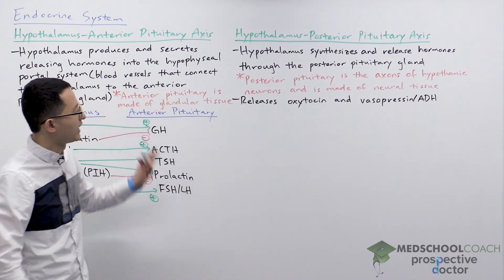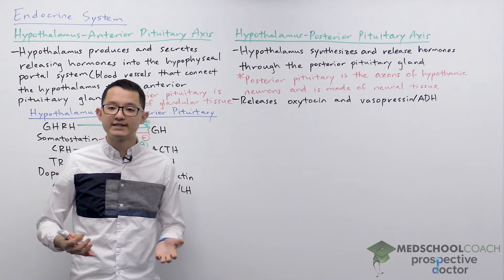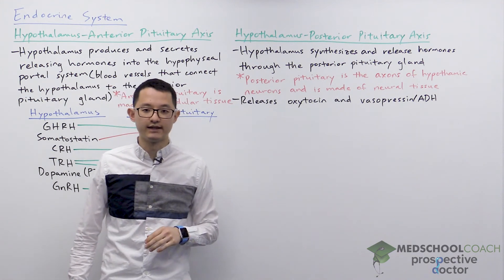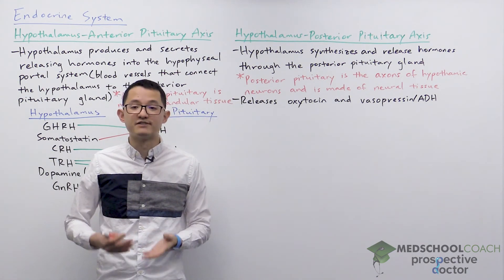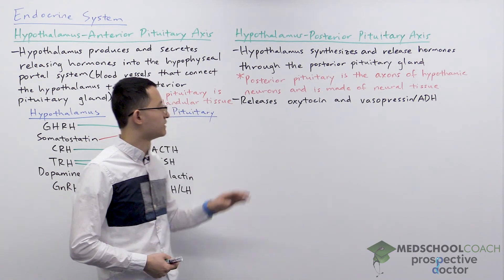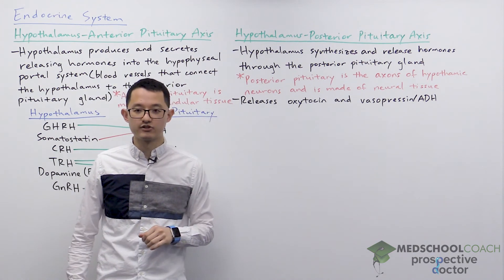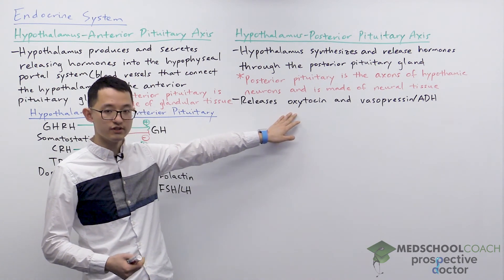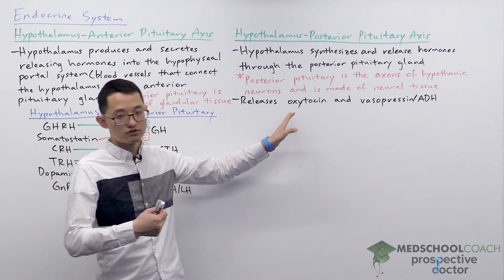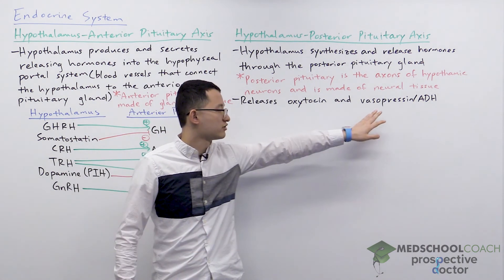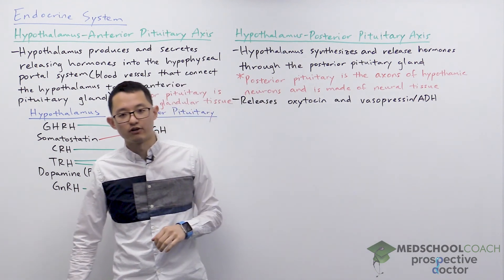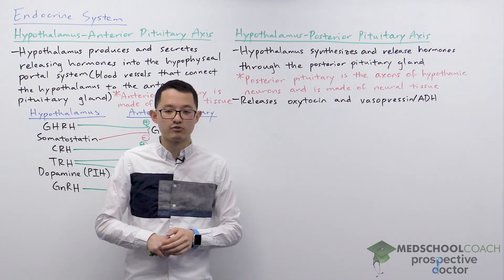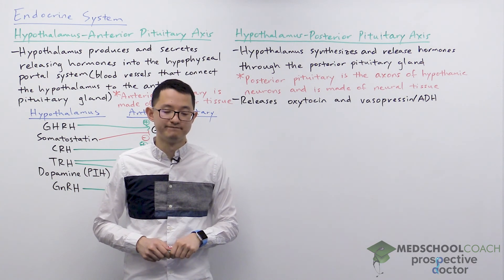Now we can look at the hypothalamus-posterior pituitary axis. In this system, hypothalamic neurons produce hormones and send their axon projections through the posterior pituitary gland. As a result, the posterior pituitary gland is made of neural tissue — not glandular tissue — because it is really just the axons of hypothalamic neurons. This system releases oxytocin, which is important for uterine contractions and has an important role in lactation. It also releases vasopressin, also called ADH (antidiuretic hormone), which has an important role in regulating blood osmolarity. In particular, the release of ADH will increase water reabsorption in the renal system.